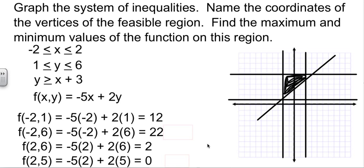They want us to find the maximum and the minimum values. Which one is the largest out of these? 22 is the largest, so we call that the maximum. Zero is the smallest, so we call it the minimum.